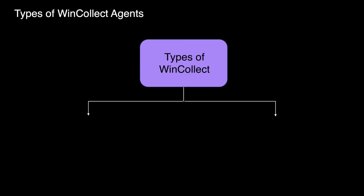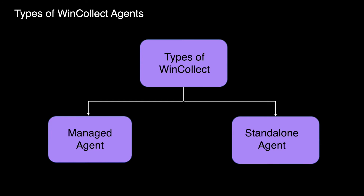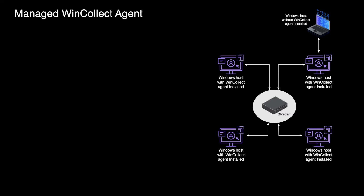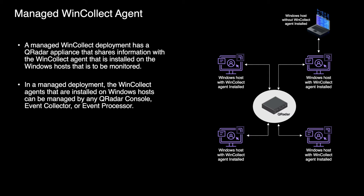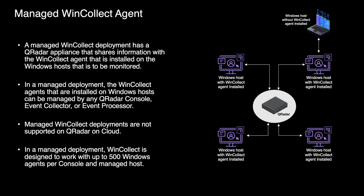There are two types of WinCollect agents: managed and standalone. In the diagram, we have an IBM QRadar appliance which shares information like configuration and code updates with the WinCollect agent installed on the Windows host. Managed deployment of WinCollect is where the agents are installed on the Windows host and can be managed by any QRadar console, event collector, or event processor. Any managed host in a QRadar deployment can act as a configuration as well as status server for the WinCollect agent. Note that managed WinCollect deployment is not supported on IBM QRadar on Cloud. It is designed to work with up to 500 WinCollect agents per console and managed host.